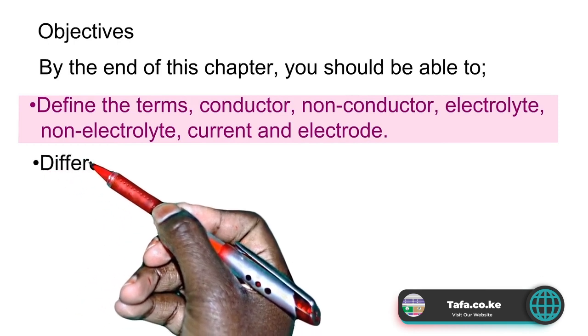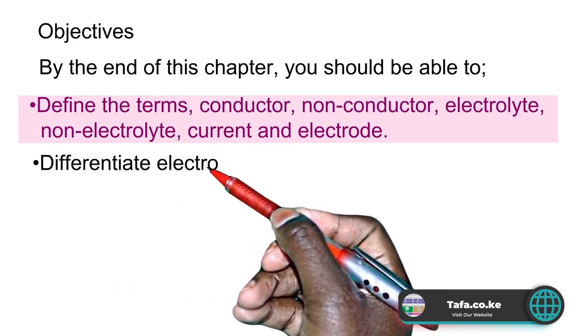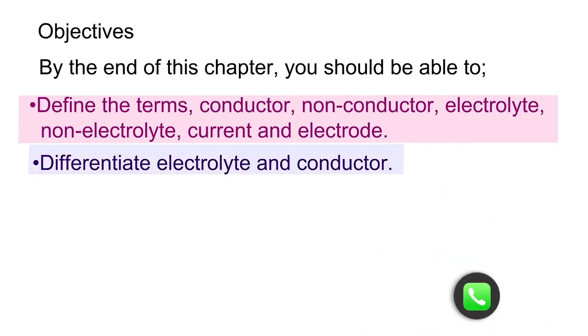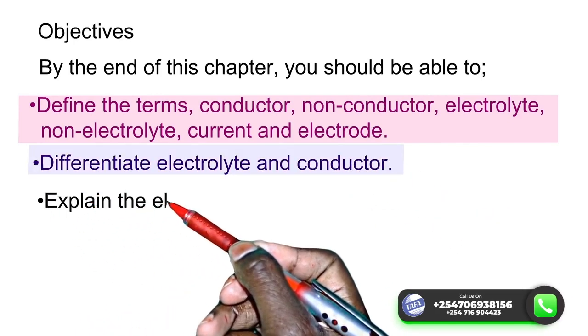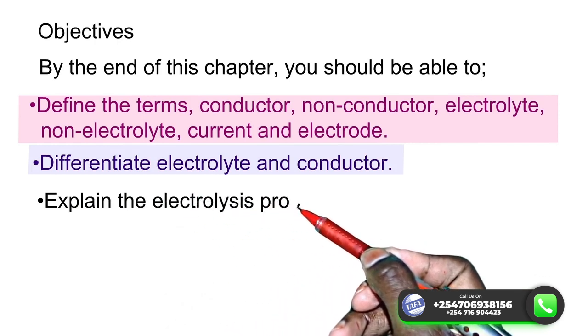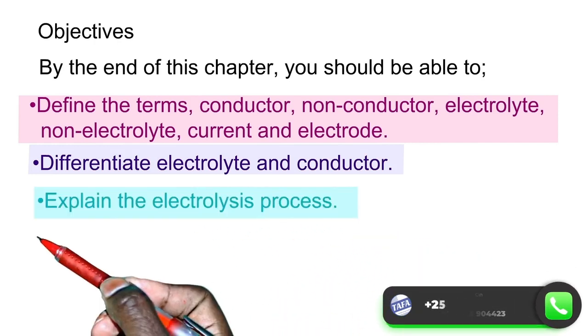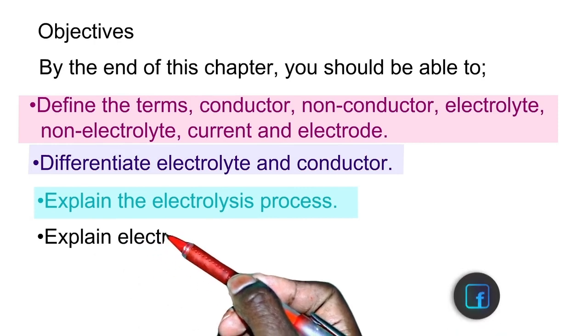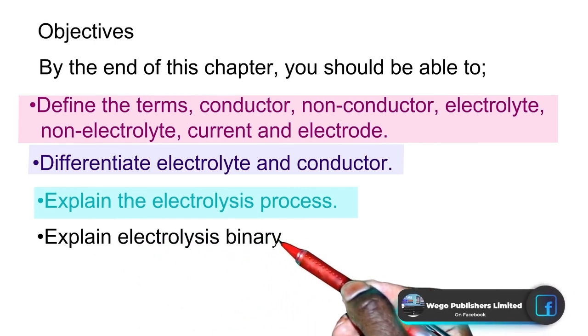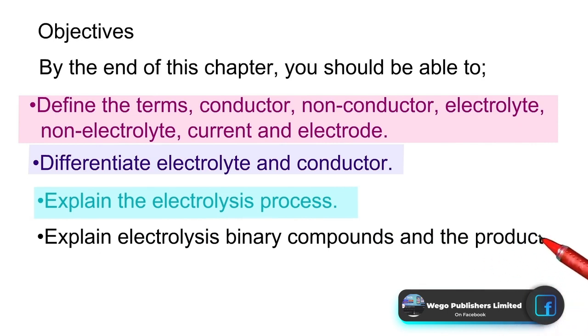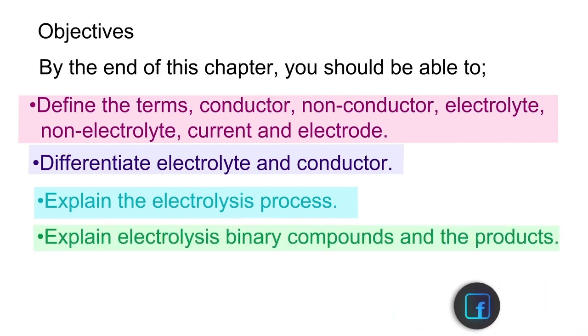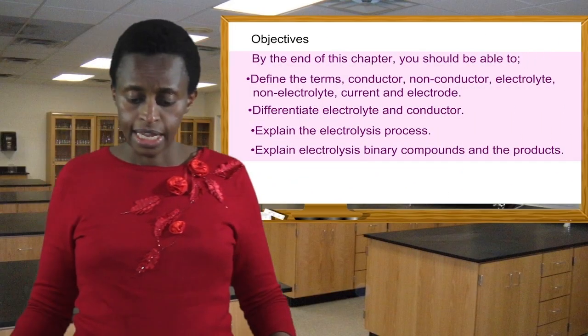Another objective that should be able to differentiate between an electrode and a conductor. Then you should be able to explain the electrolysis process. Then you should be able to explain electrolysis of binary products and also state application of electrolysis.